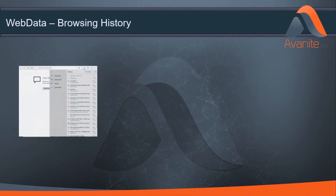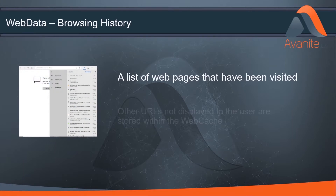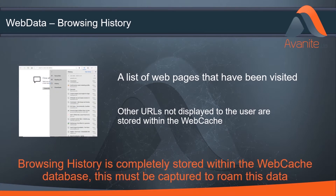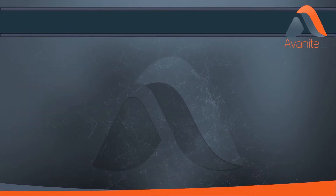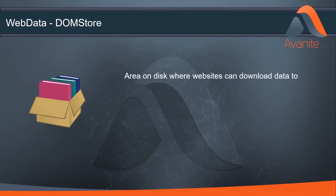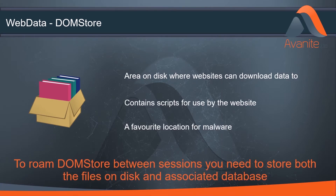History is another common form of web data used extensively by users. Web pages that are visited are recorded and then shown back to the user to allow them to revisit the sites they've been to previously. Domstore was introduced by Microsoft with Internet Explorer 8 and, like cookies, provides an area on disk where websites can download data to. Client-side data such as scripts are commonly found here, though care should be taken as this is also a common location for malware.